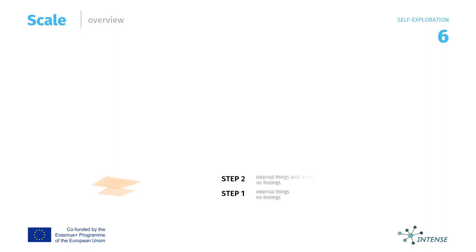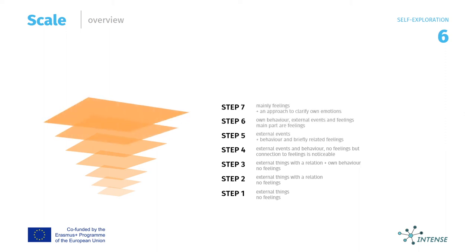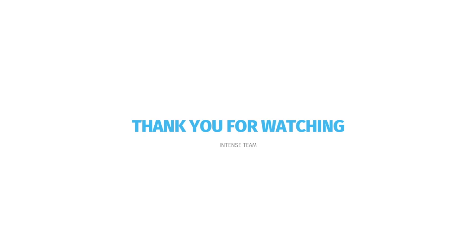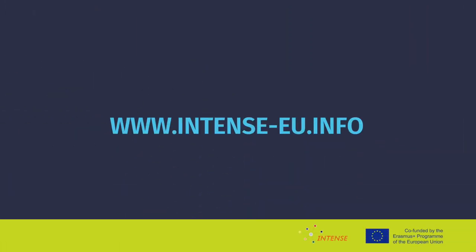The upside-down pyramid consists of 9 levels of difference, transparency and size. Both symbolise that the more the client goes on with his or her self-exploration, the more he or she is able to expand the perception of feelings, emotions, thoughts and their backgrounds, as well as the ability to gain self-competence and to pursue self-development.